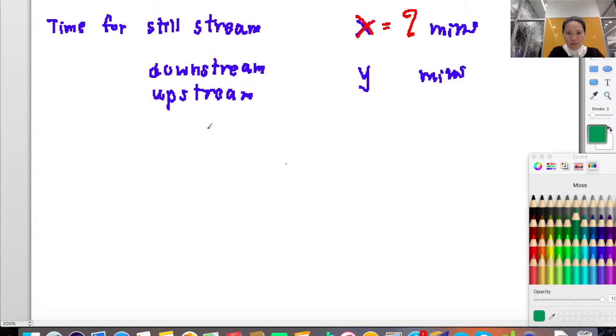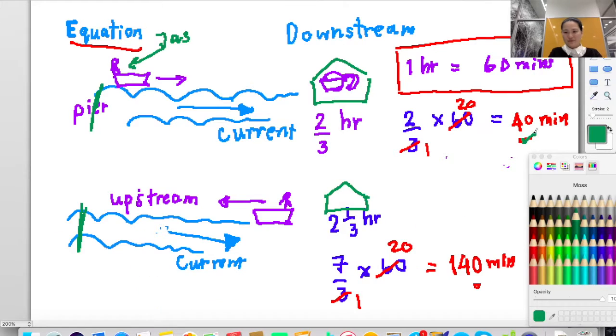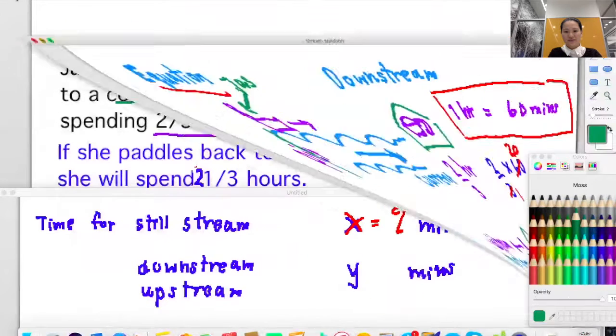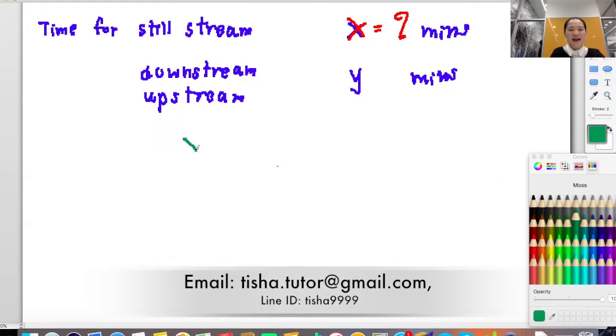We know that downstream equals 40 minutes, so we set up equation x minus y equals 40. And when you go upstream, spending more time, x plus y equals 140.